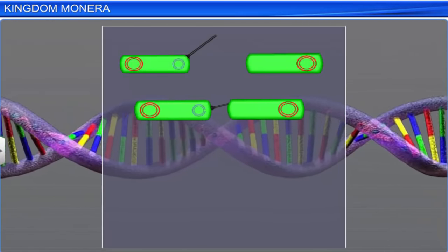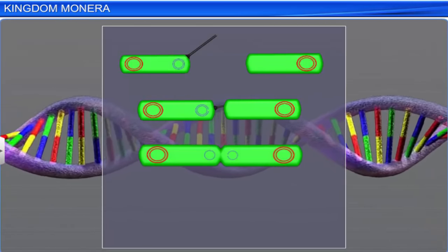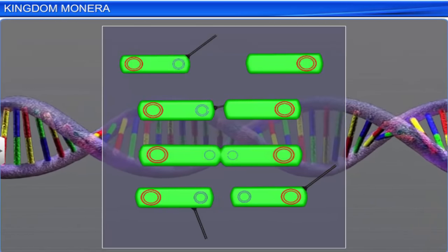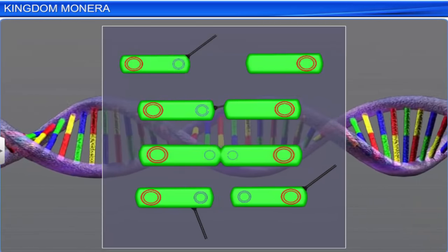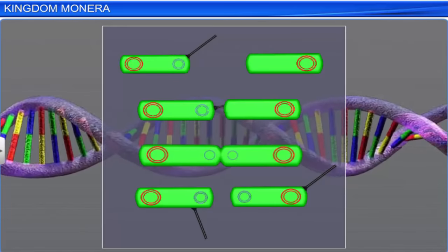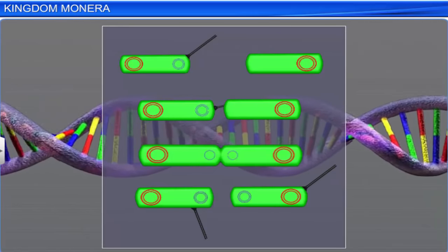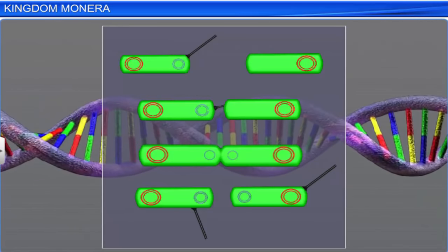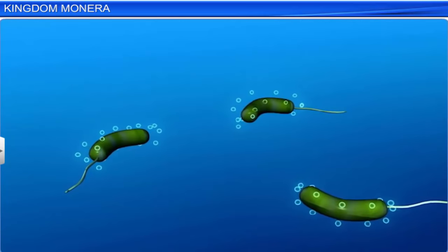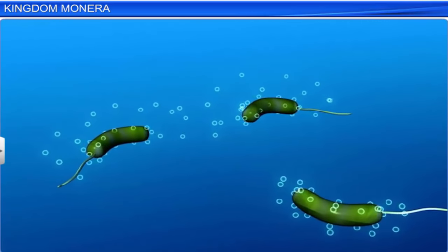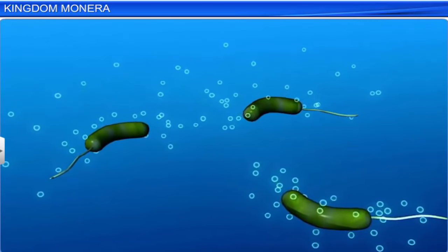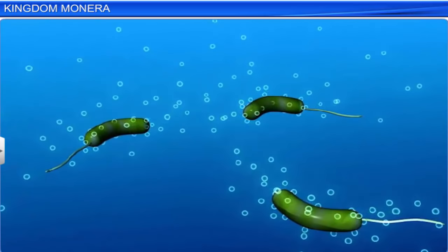Bacteria reproduce by fission. They can also reproduce sexually by a primitive DNA transfer from one bacterium. They also produce spores.